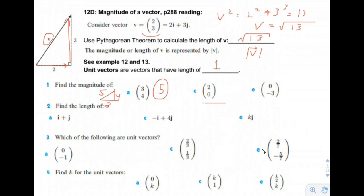For vector (2, 0): 2 to the right and 0 up, so the length would just be 2. This one, the length would just be 3. Find the length of 1i plus 1j — that would be a 45-45-90 triangle, so this would be the square root of 2.